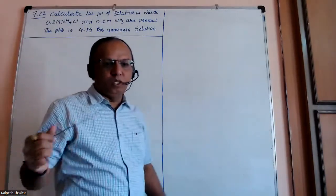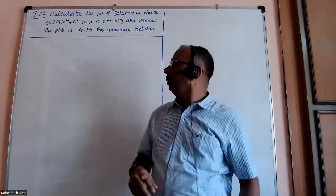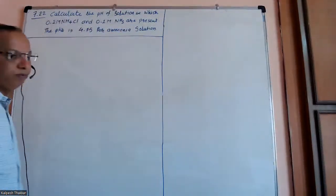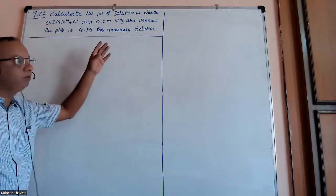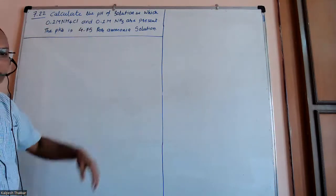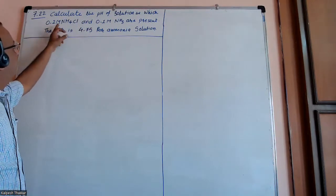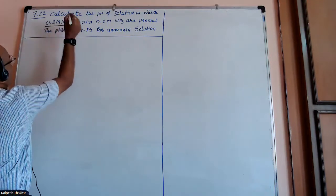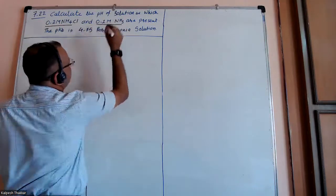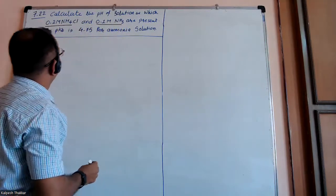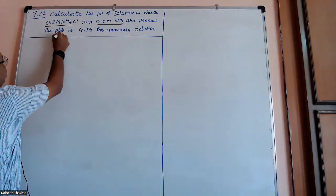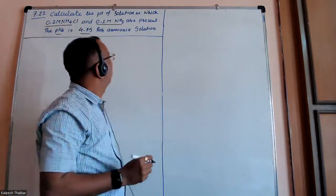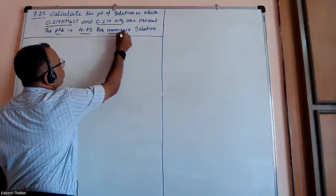Today we are going to learn one important numerical from chapter number 7. The question is: calculate the pH of the solution in which 0.2 molar NH4Cl and 0.1 molar ammonia NH3 are present. The pKb value is given as 4.75 for the ammonia solution.